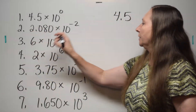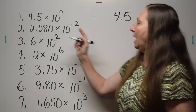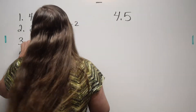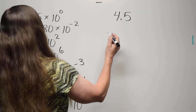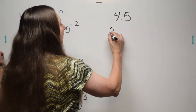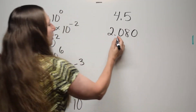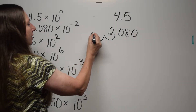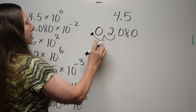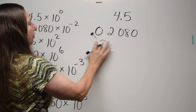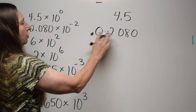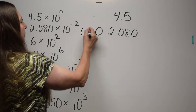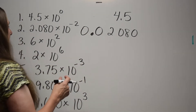Here, a negative exponent means we have to move the decimal to the left. We've got 2.080. We're going to move the decimal two places to the left. So the correct answer is 0.02080. If you want to put a zero in front, no big deal — doesn't matter.